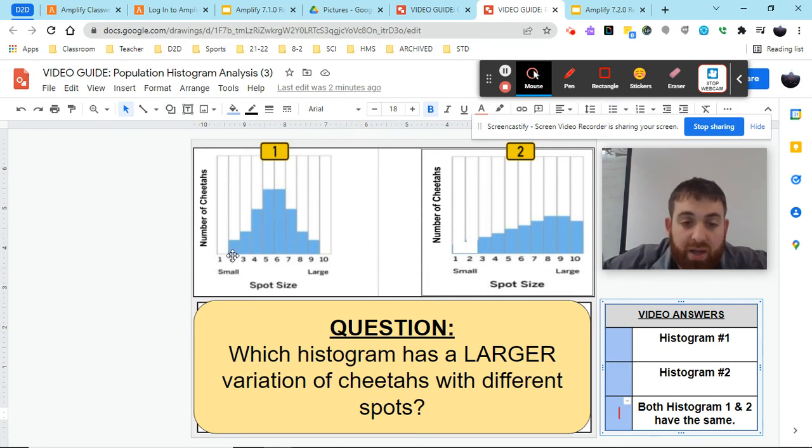well, histogram one has 1, 2, 3, 4, 5, 6, 7, 8 variations, all with spots.